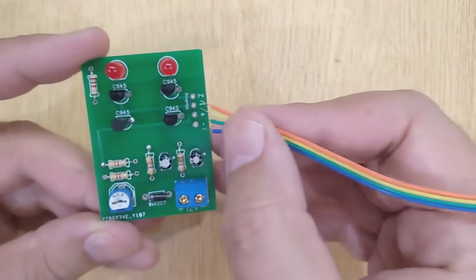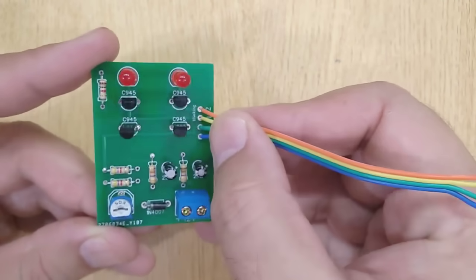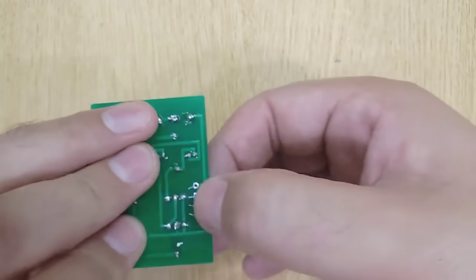Now solder 4 wires with the blinker circuit. We will connect it with the LED board later.